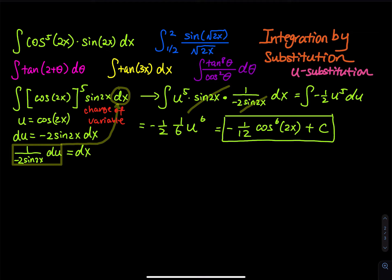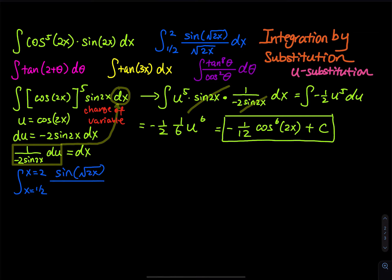You might also try u equals 2x, but that won't work either. On homework it's good to try, so you earn the experience and know what works on tests. The integral is from x equals one-half to x equals 2, and the integrand is sine of square root of 2x divided by square root of 2x dx. We let u equal square root of 2x.